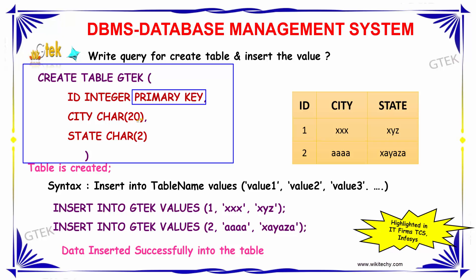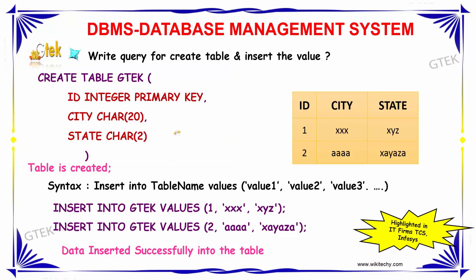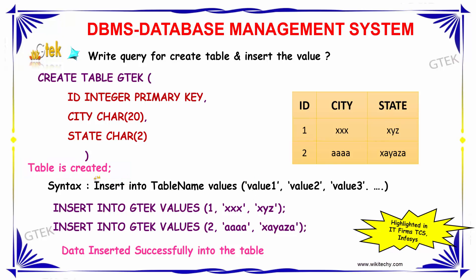The city column has a length of 20, and state is of character type with a length of 2. When you execute this query, you will get the information that the table is created. So your table will be created — this is the syntax.